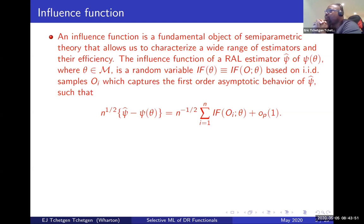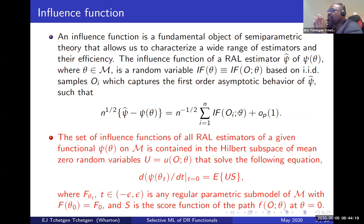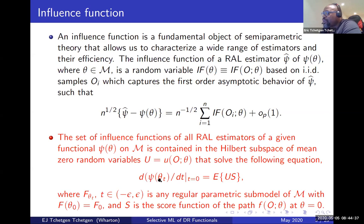An influence function is a fundamental object of semiparametric theory that allows us to characterize a wide range of estimators and their efficiency. The influence function of a regular asymptotically linear estimator psi-hat is a random variable IF depending on theta and psi, based on iid samples, which captures the first-order asymptotic behavior of the estimator. It gives the standard expansion describing the estimator as asymptotically normal with variance determined by IF.